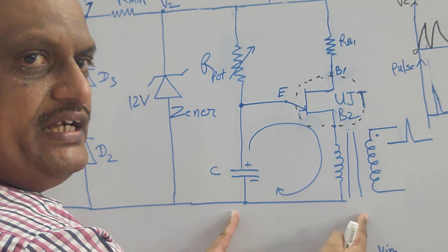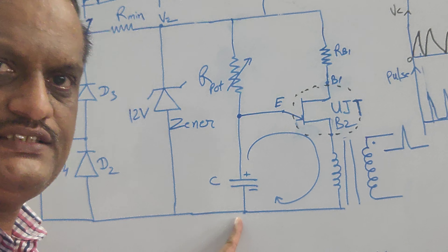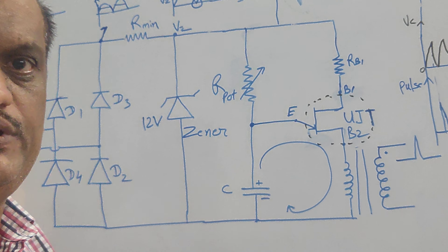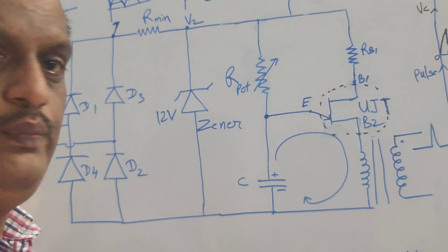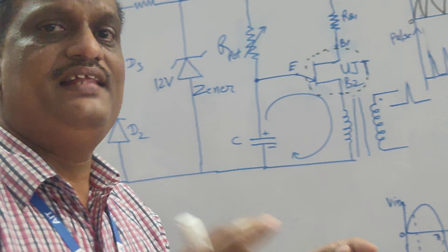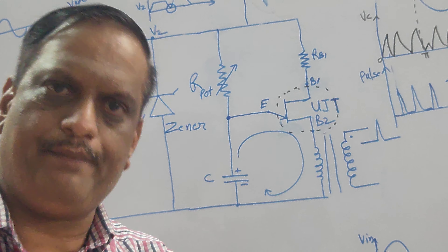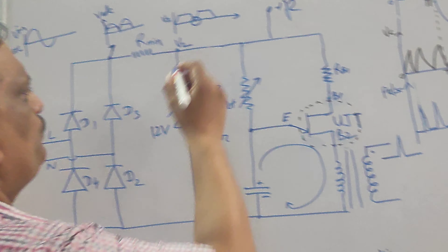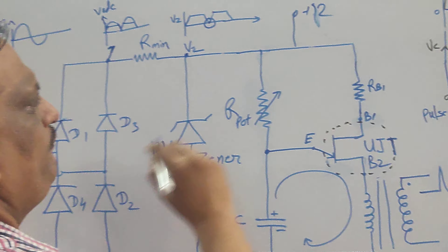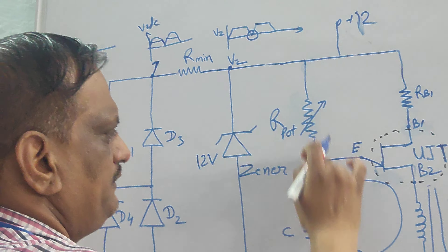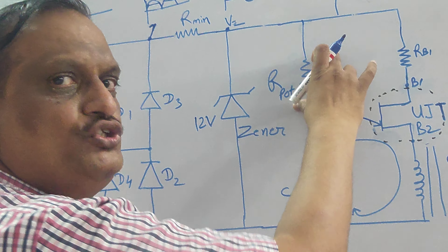This is basically the triggering circuit. The UJT triggering circuit will generate the firing pulses, but for generating the firing pulses we require DC voltage to be generated, and that DC voltage should be synchronized with the power circuit. The power circuit input voltage and this voltage should be synchronized — they are taken from the same tap. Once you get the 12 volts at this point, the capacitor will charge through the pot, depending upon the position of the pot.